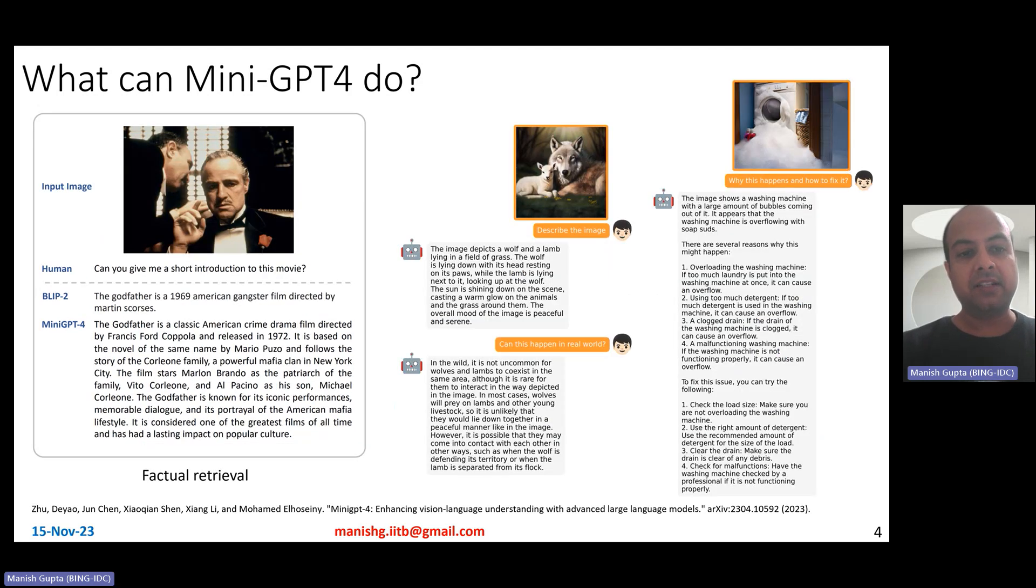So what all it can do, well, it can also come up with this, given this image, give me a short introduction to this movie. So, of course, it understands that it is Godfather and then it comes up with a very nice introduction or a short description about the Godfather movie. It can take these not so real images or uncommon images. And then, if you ask it to describe the image, it nicely says that it's about a wolf and a lamb sitting next to each other on grass. And is it common? Well, it's not common to happen in the real world.